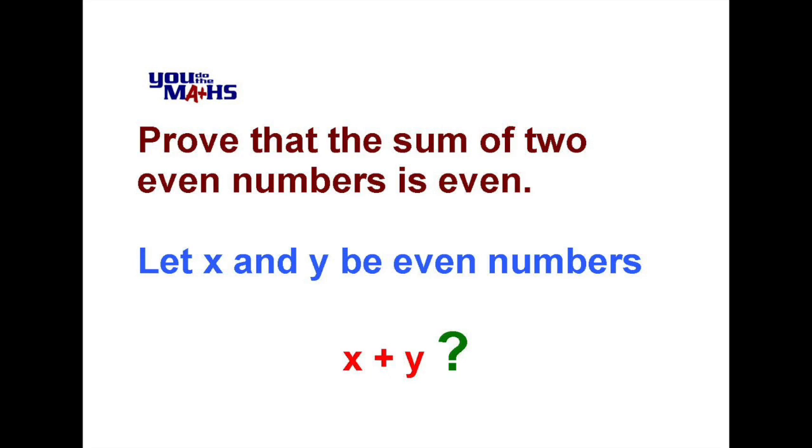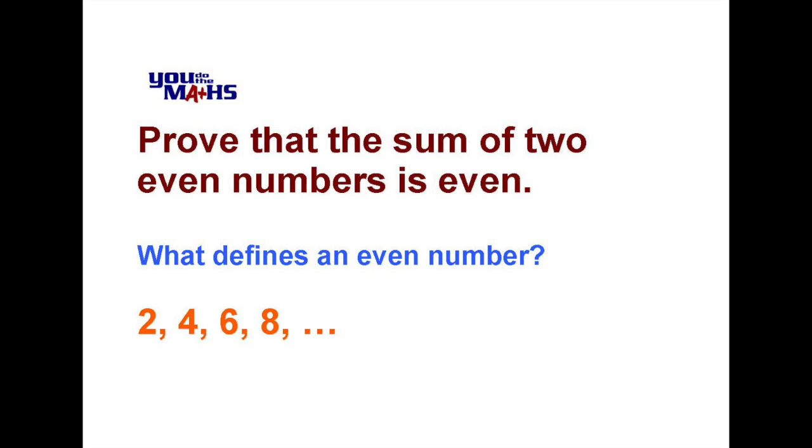So what we need to do is consider the definition for an even number first. We know that an even number starts at 2 and then builds up by adding 2 each time, so 2, 4, 6, 8, etc., even numbers, and they follow a pattern where they're all multiples of 2, so 2 is equal to 1 multiplied by 2, 4 is 2 multiplied by 2, etc.